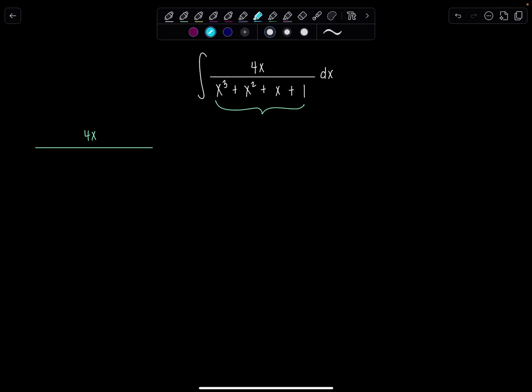So looking at just the first two terms, I can take out an x squared, and then I'm left with x plus one. And then the second two terms, similarly, x plus one, they don't have a common factor. So their common factor is one times x plus one.